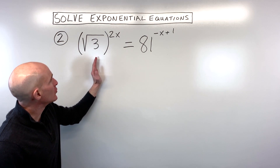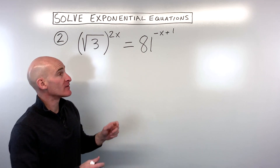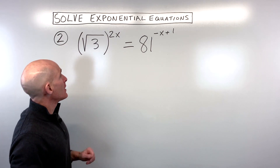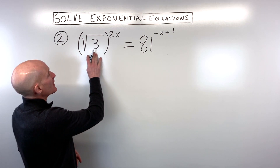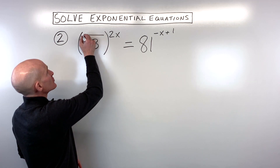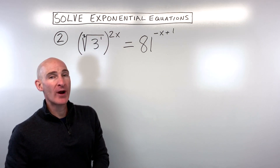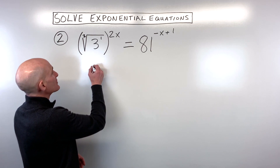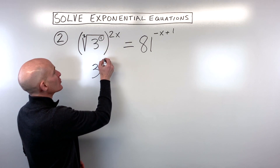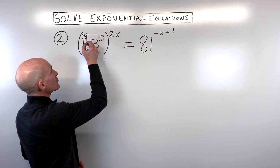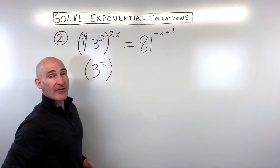For number two, when you look at the bases, what would be a good common base? When I look at this I'm thinking three. When we look at a square root like this, this is really index two and the power one. If you remember from rational exponents, the power goes in the numerator and the index or root goes in the denominator. So the square root of three is really three to the one half power.